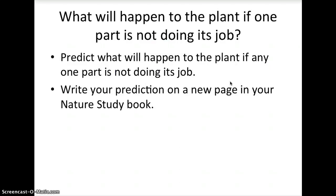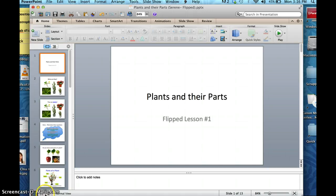Now ask yourself: what would happen to the plant if any one part stopped functioning? For example, if you removed all the leaves, cut away all the roots, or broke the stem — what would happen? Write your predictions on a fresh page in your nature study book. Also think about this: can non-green leaves make food for the plant? Write down what you think as well. Okay, that ends our lesson — goodbye everybody, I'll see you in the classroom!